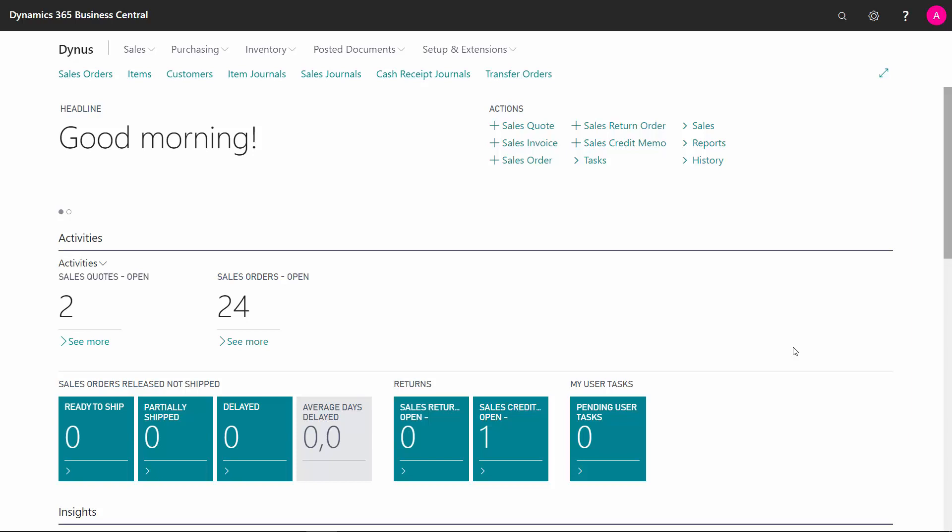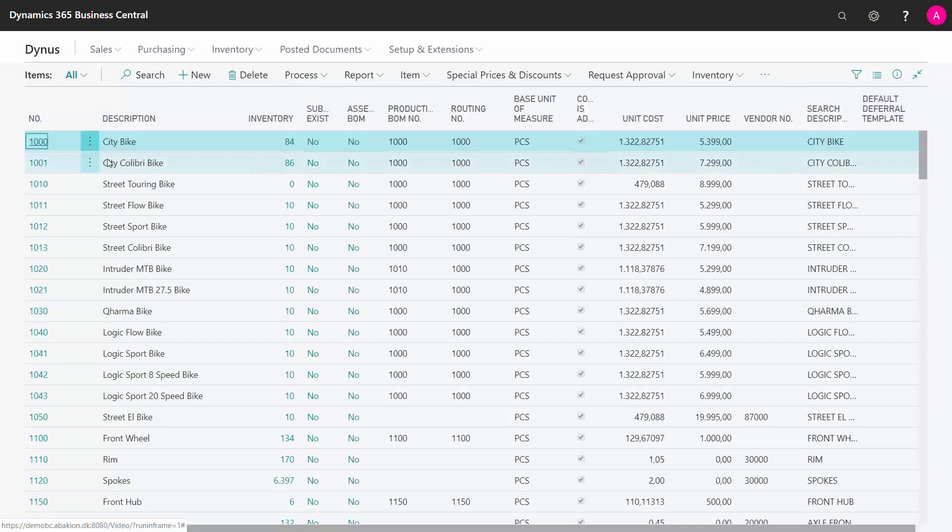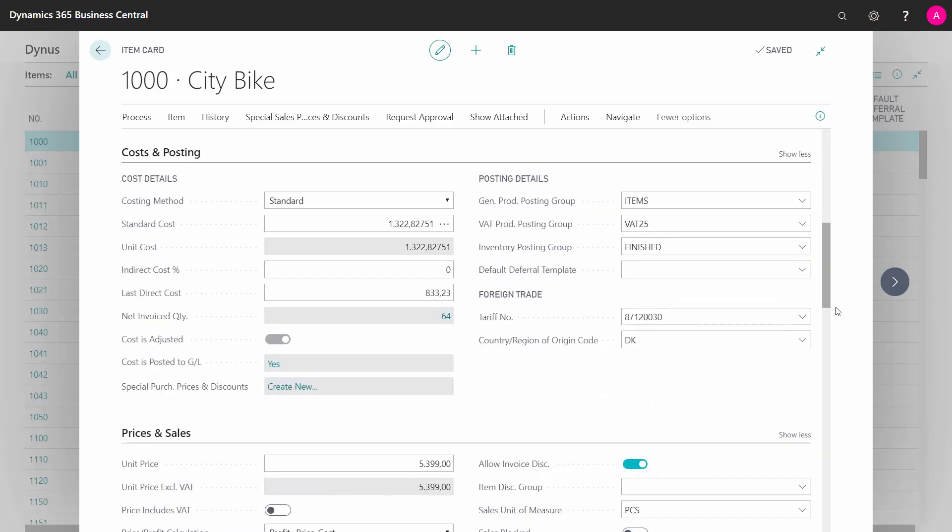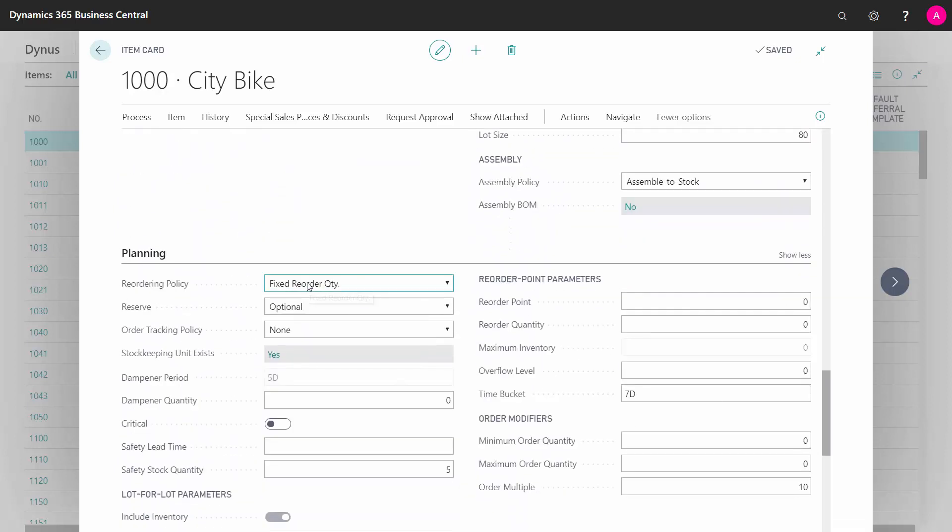Let's take a short look at the reorder policy fixed order quantity and how that works. If I'm entering an item card in Business Central, on the Planning tab, I could select fixed reorder quantity like this.